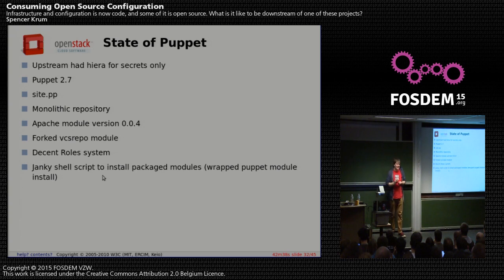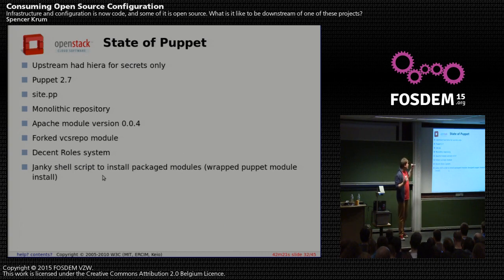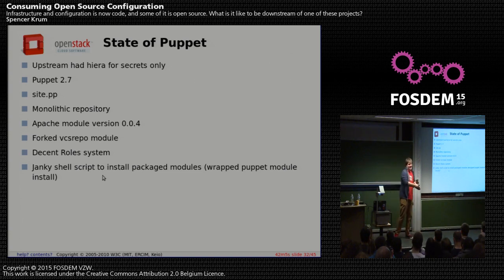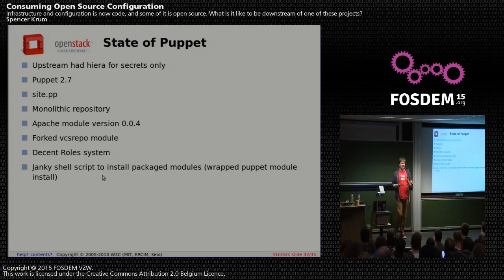Apache module 0.0.4 is very old. You can get anything done in it, but there's an API change meaning you can't use any module that depends on a modern Apache version. That sends you further into consuming old code and writing your own. They also had a forked VCS repo module — OpenStack CI VCS repo instead of PuppetLabs VCS repo — which causes problems with the module installer. They had a decent role system and a shell script for installing Puppet modules using Puppet module install rather than R10K.